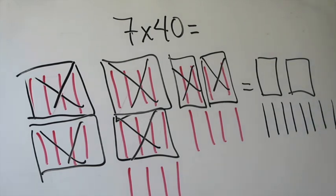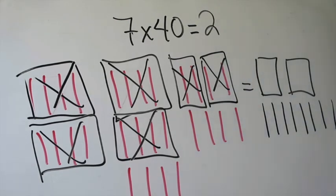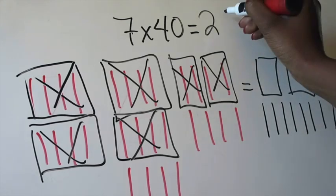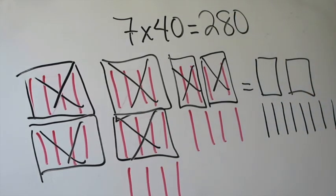Now I'm going to represent that as an answer. I know I have 2 hundreds, so I want to put 2 in the hundreds place. And I have 8 tens left, which I know is 80. So that tells me, using my quick picture, that the product of 7 times 40 is going to be 280.